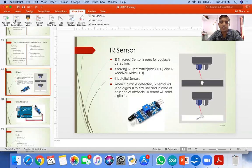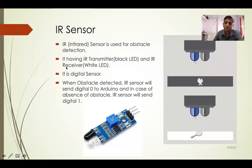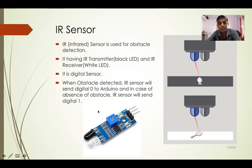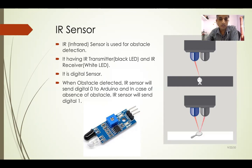The next interfacing is the IR sensor — this is a digital sensor, an infrared sensor used for obstacle detection. It has two diodes: one for transmission and one for reception. The black LED is the transmitter and the white LED is the receiver. It is a digital sensor giving output of only 0 or 1. When an obstacle is detected, the IR sensor sends digital 0 to Arduino; if anyone is in front of it, it sends 0. In the absence of an obstacle, it sends 1.